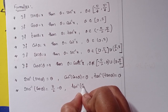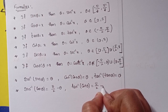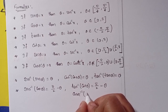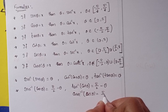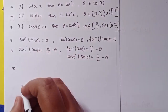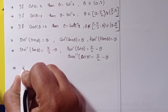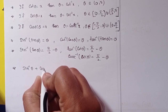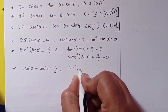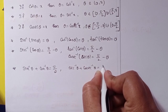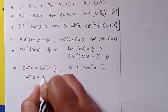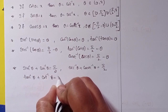tan⁻¹(cot θ) = π/2 − θ. cosec⁻¹(sec θ) = π/2 − θ. Also, sin⁻¹(θ) + cos⁻¹(θ) = π/2.